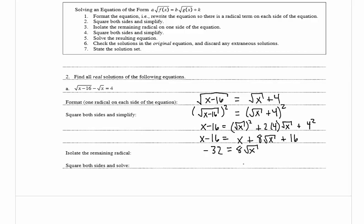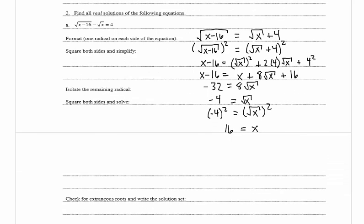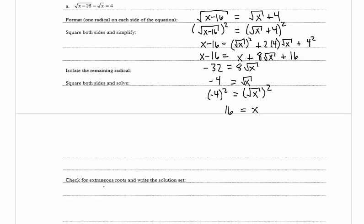Dividing both sides by 8 gives the square root of x equals negative 4. Squaring both sides gives x equals 16. Now we check whether 16 is an extraneous solution by substituting back into the original equation: the square root of 16 minus 16 minus the square root of 16 equals 4 becomes 0 minus 4 equals 4, which is false. So our solution set is empty.